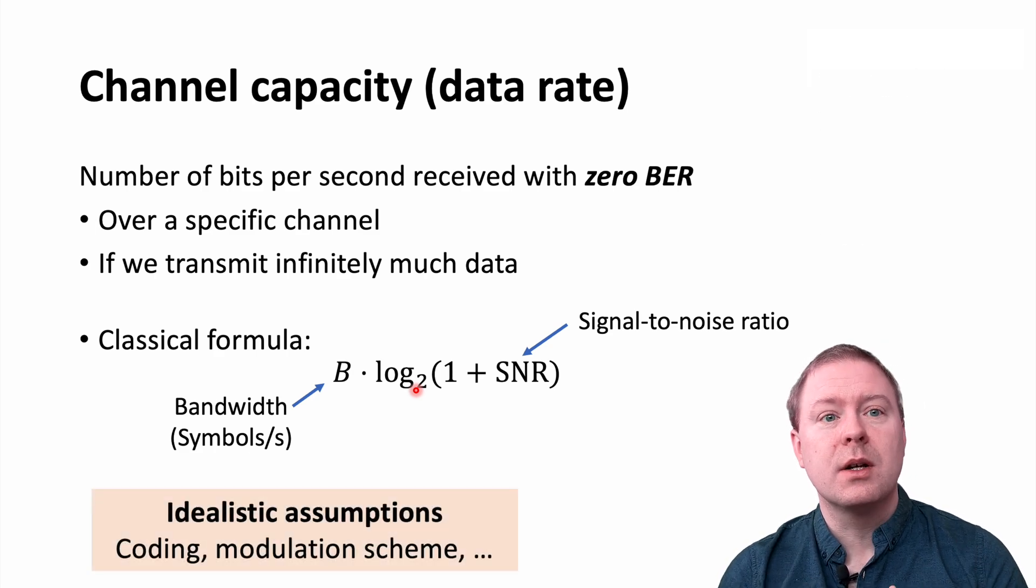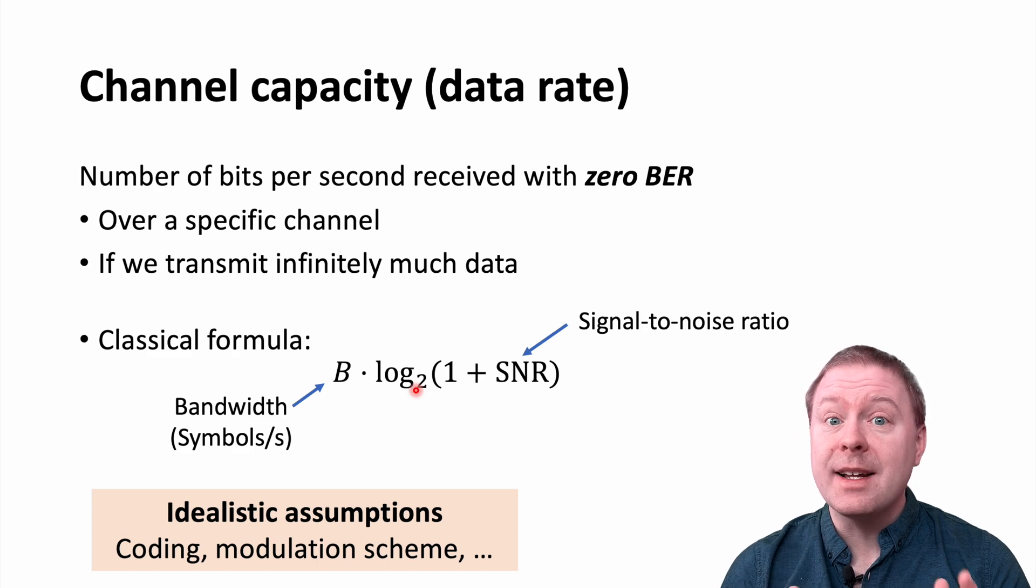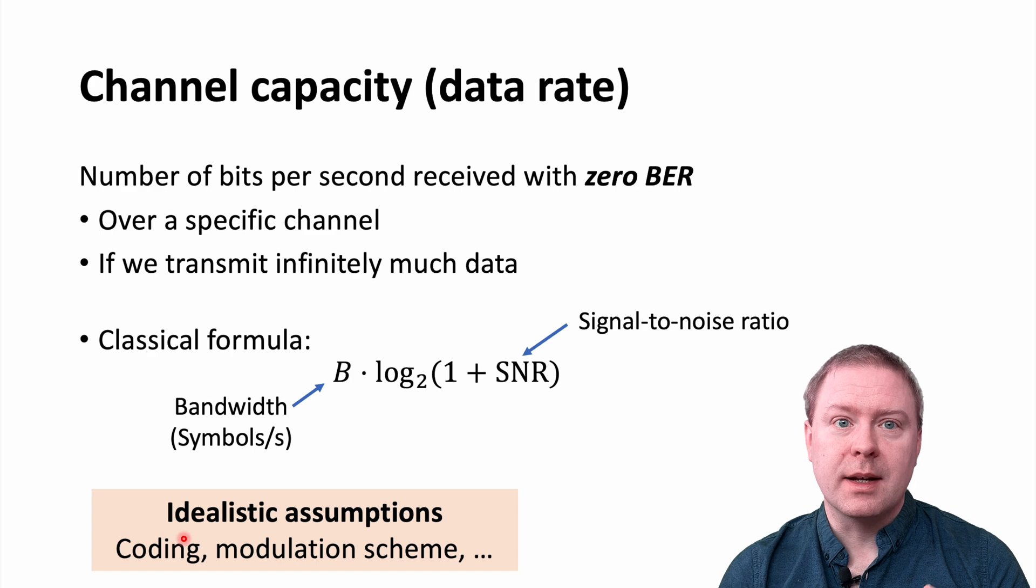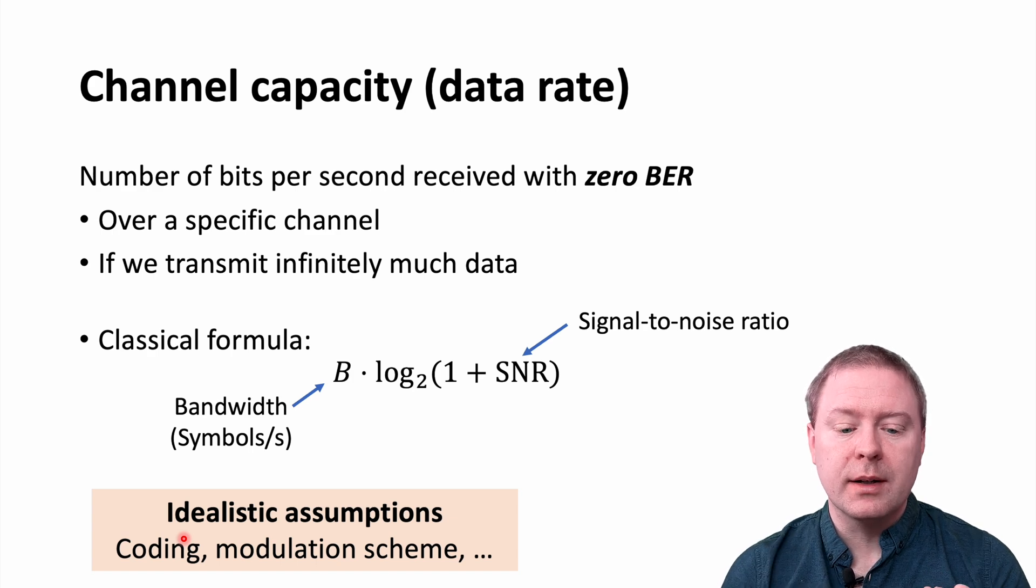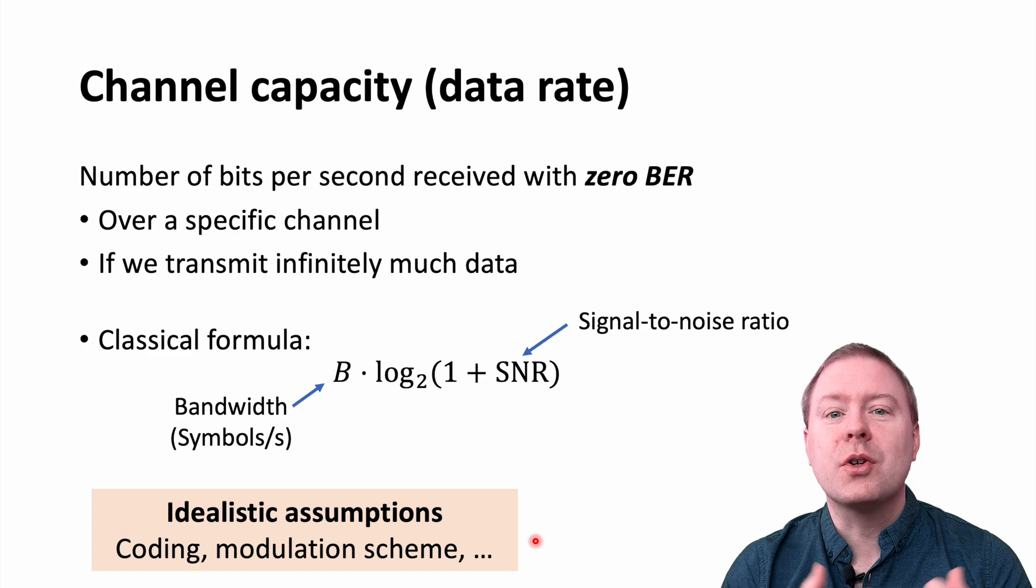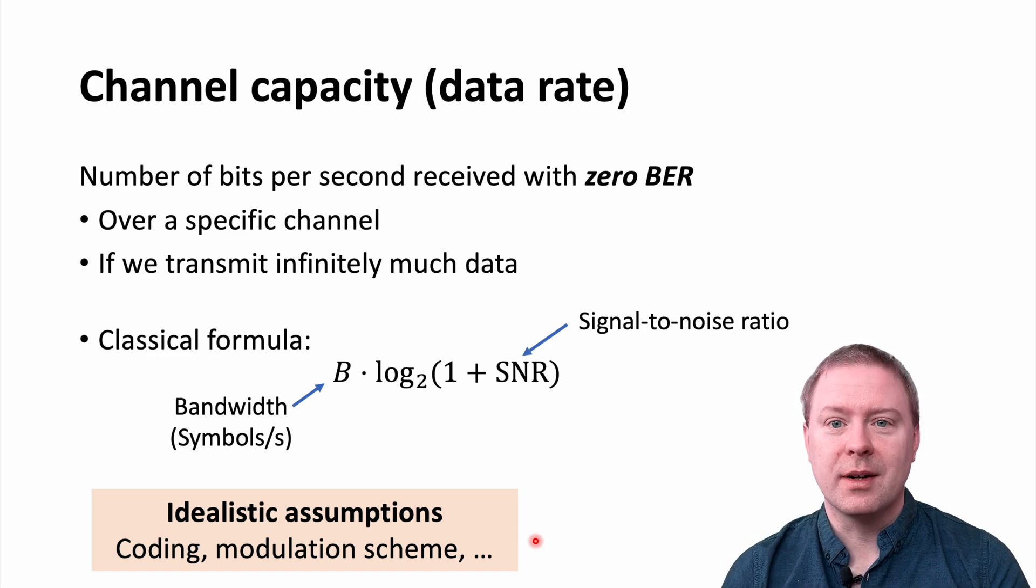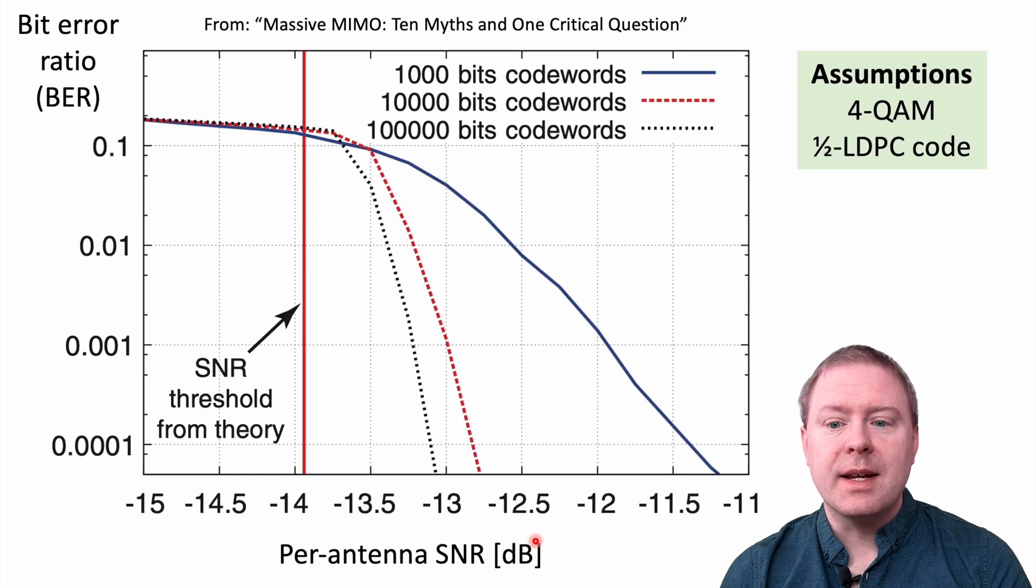The whole thing is relying on some idealistic assumptions, such as transmitting infinitely much data, sending it with the ideal coding and modulation scheme, and there's a number of other things regarding how much complexity we need to spend on actually decoding the information. This is the ultimate limit. But is it relevant when evaluating practical systems? Let's take a look.